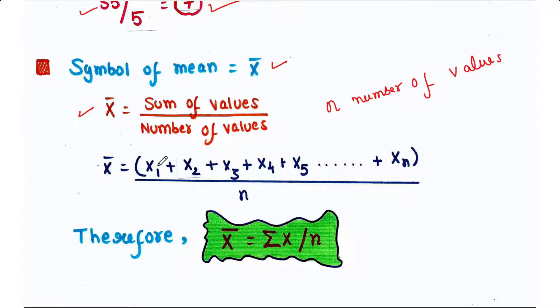Then we will add all of the values, like x1 plus x2 plus x3 plus x4 plus x5, etc., plus xn, divided by n. Therefore, it can be stated that x-bar is equal to summation of x divided by n.